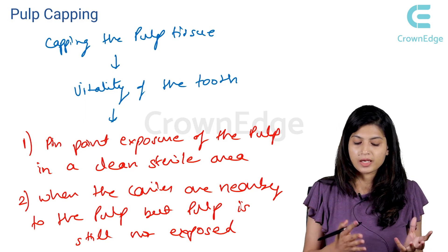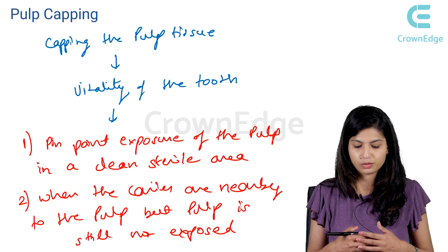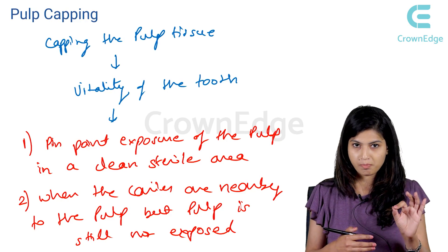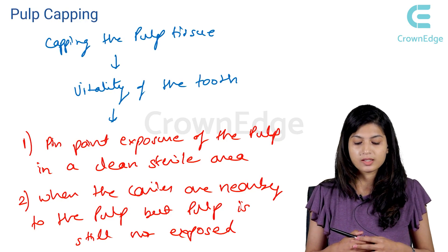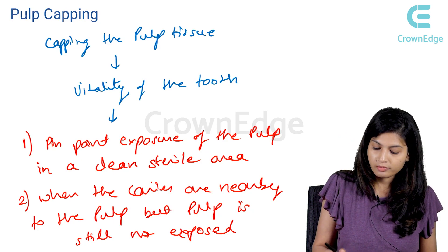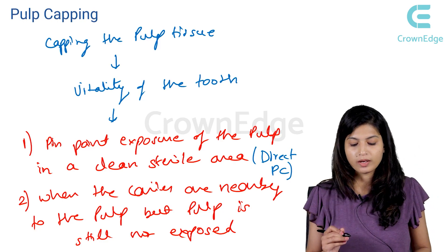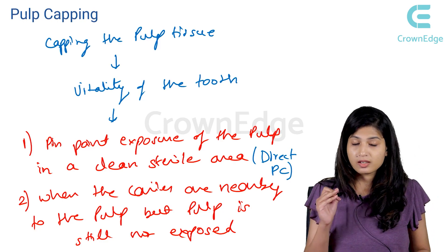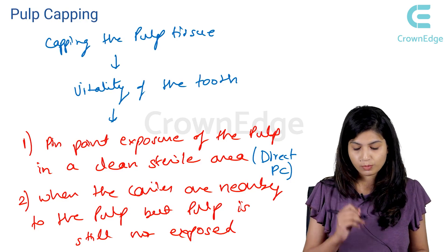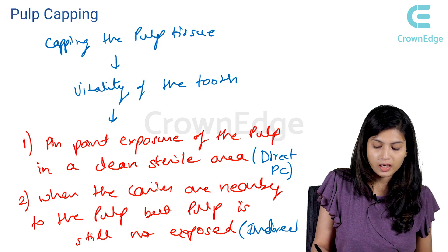Based on these two conditions, we have some terms associated with pulp capping. The first condition — whenever there is a pinpoint exposure of the pulp in the sterile area — we call this direct pulp capping. The second condition — when the caries are very nearby to the pulp but the pulp is still not exposed — we call this procedure indirect pulp capping.